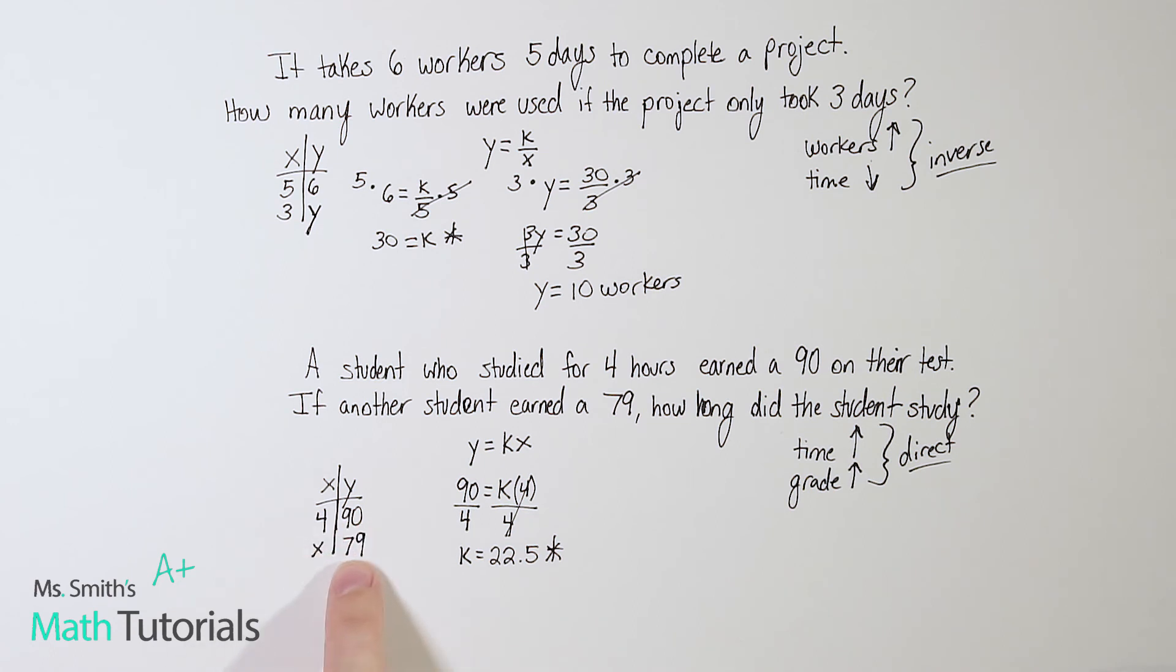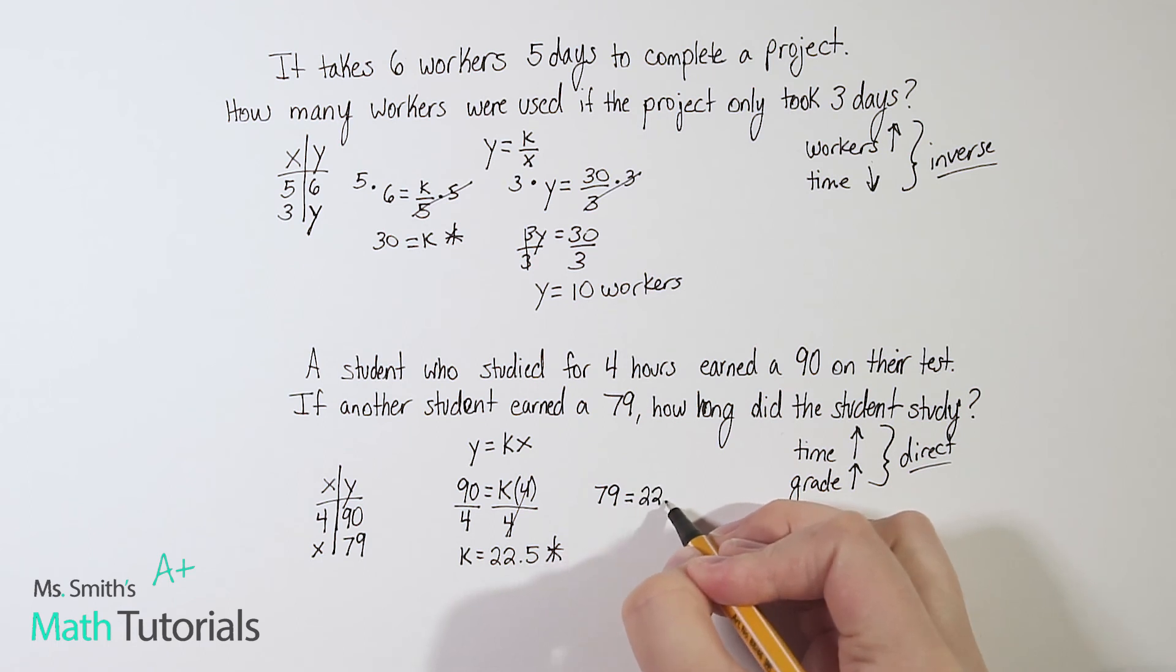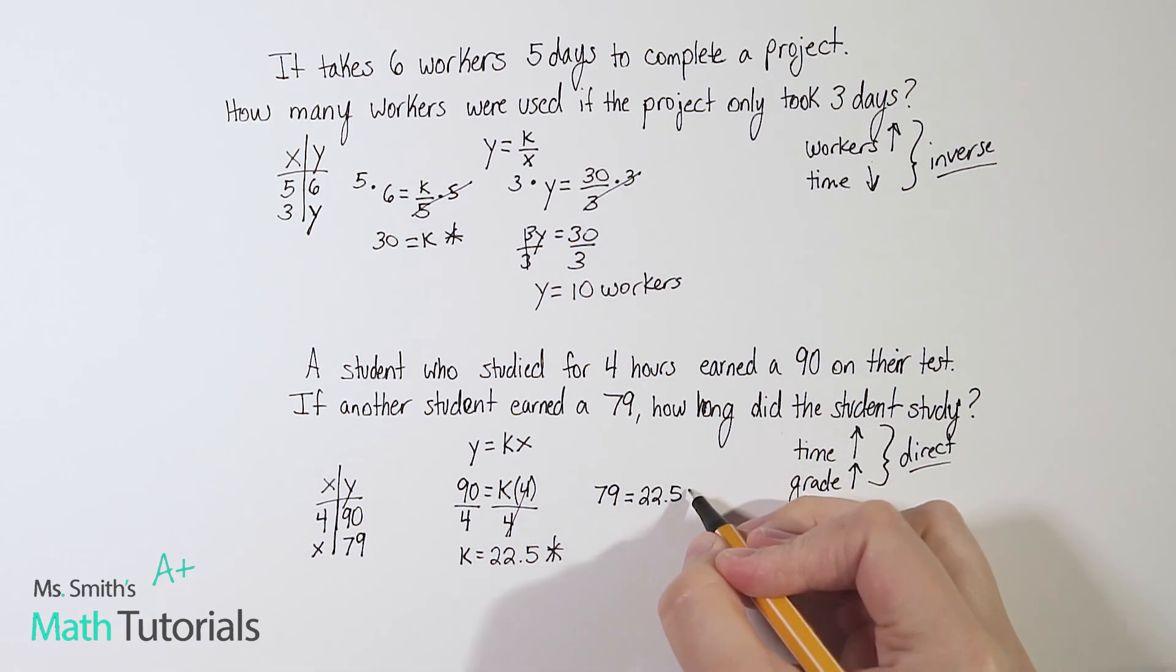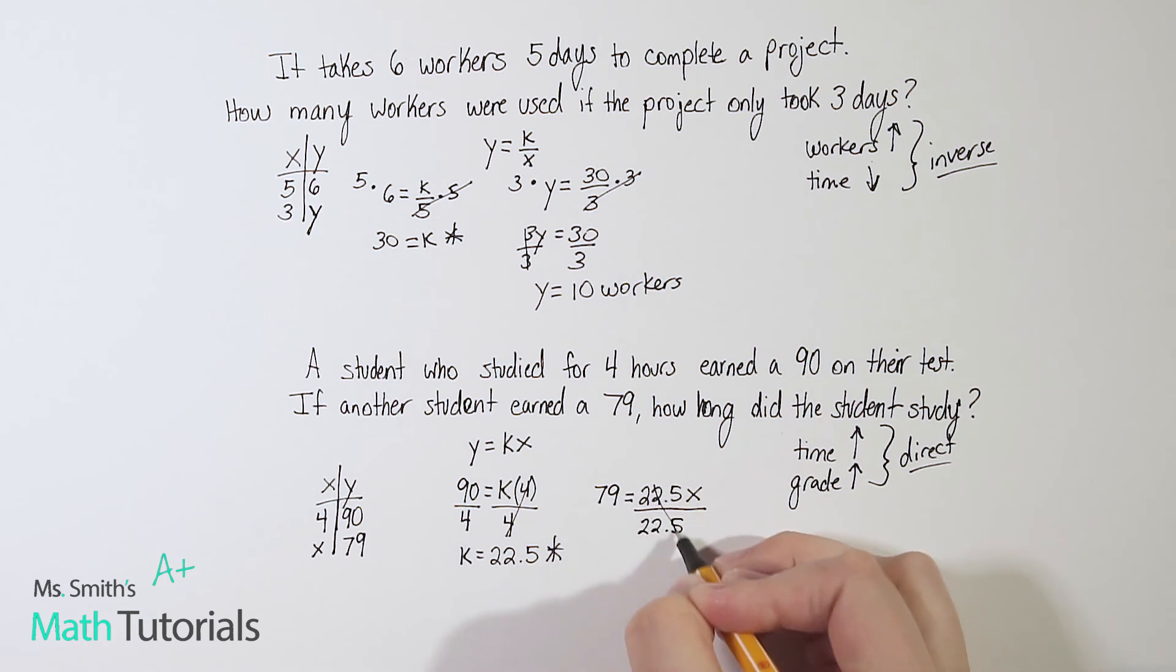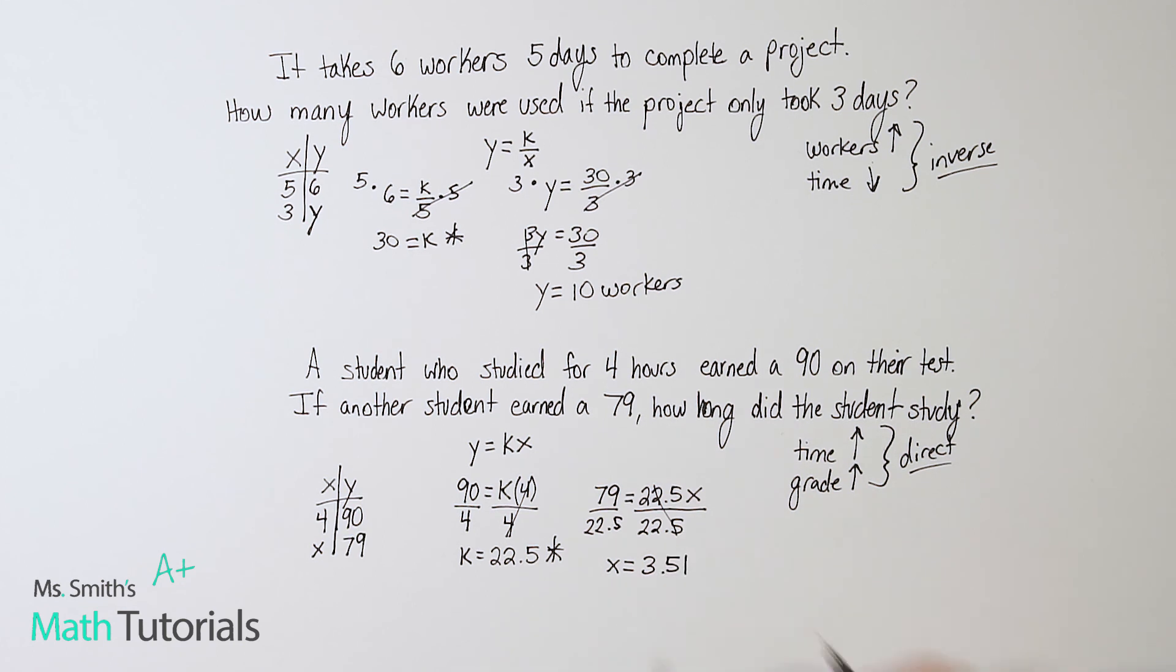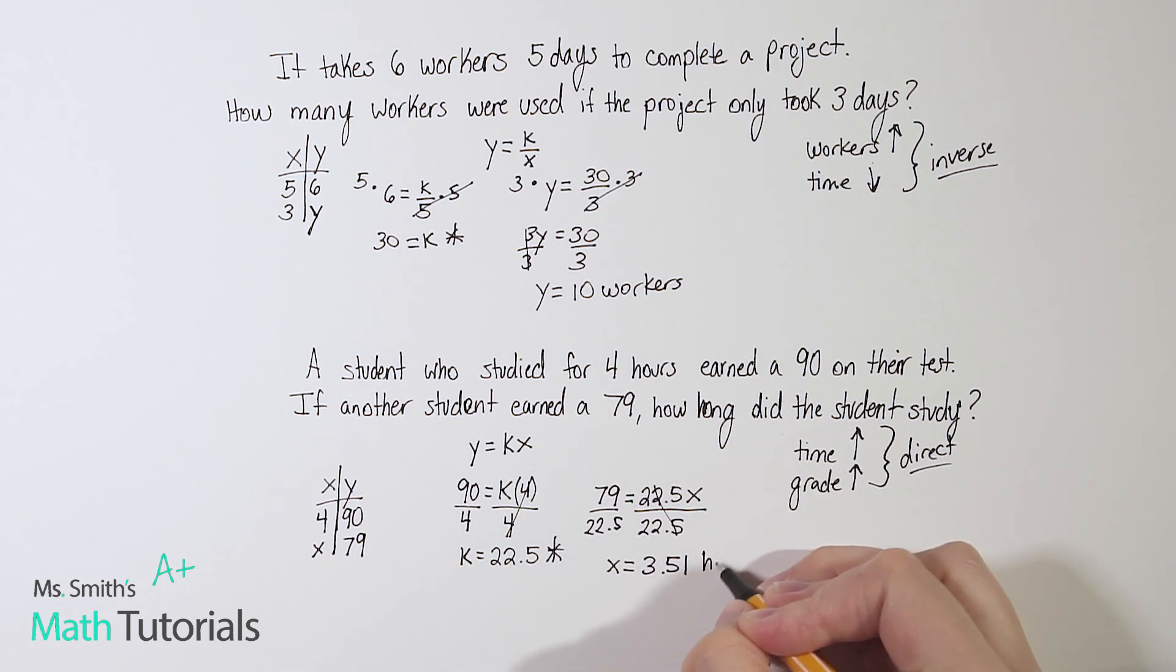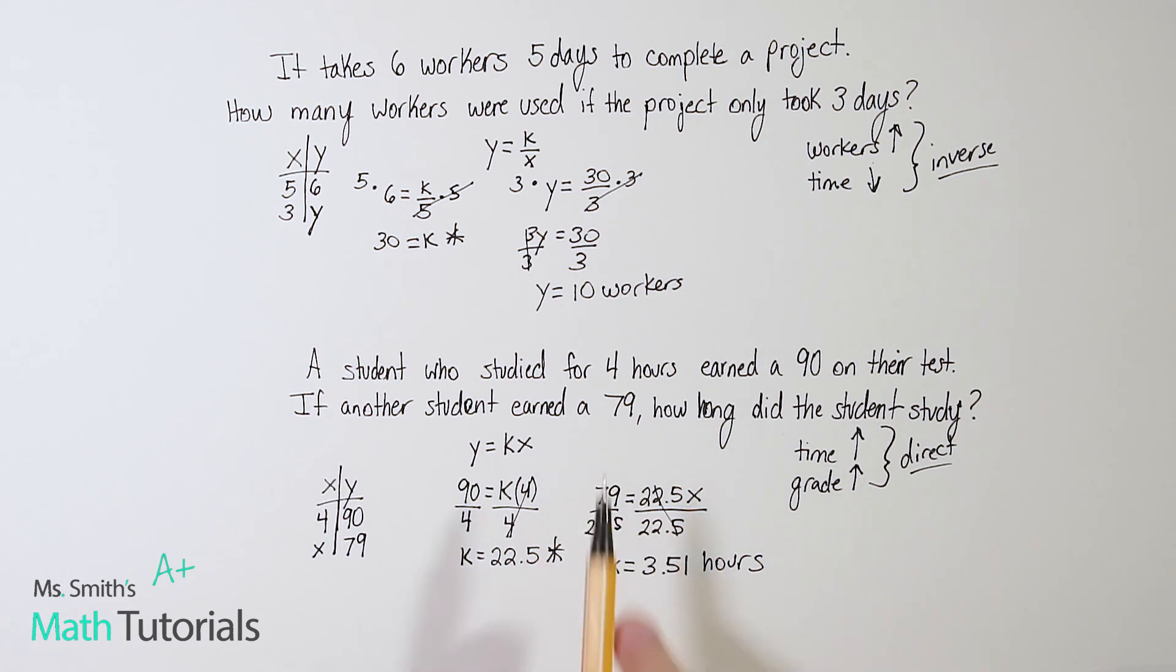Now I can move into the big question. All right, so we're going to use that same formula again. This time y is going to be 79 equals k. Now we know k. 22.5 times x. That's what we're looking for. And the same thing again. I got some multiplication here. I need to divide. And let's see, I'm not going to get a whole number, but 79 divided by 22.5 is 3.51. Or you could say 3.5 if you were rounding. And what is x? Well, remember, x is hours. So it takes approximately a predicted amount of three and a half hours in order to obtain a 79 on this particular test.